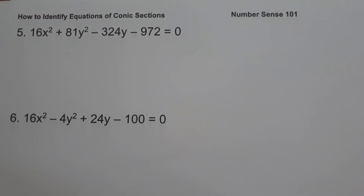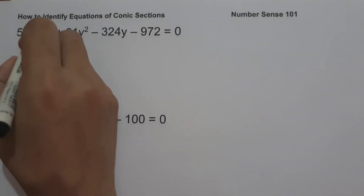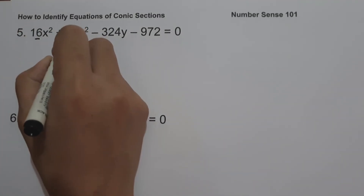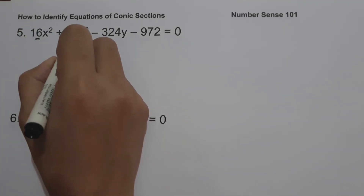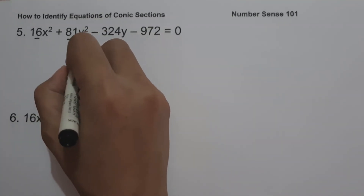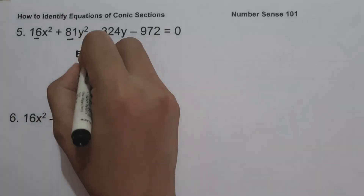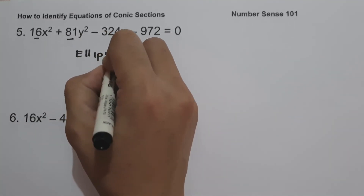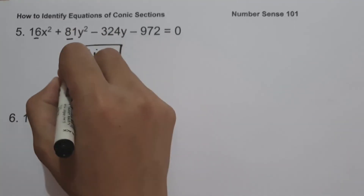On example number five: 16x² + 81y² − 324y − 972 = 0. Since the coefficient of x² is not equal to the coefficient of y² but they have the same sign, we can say that this equation is an ellipse.